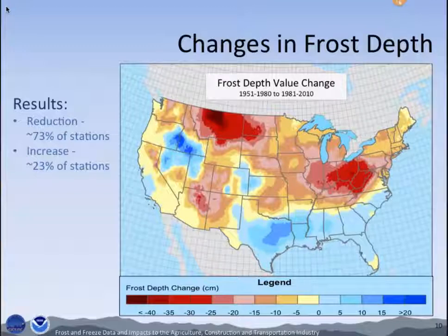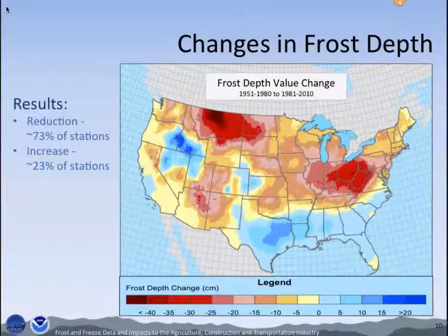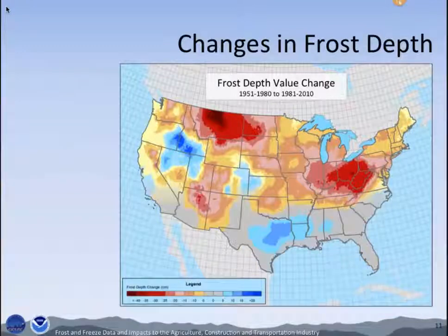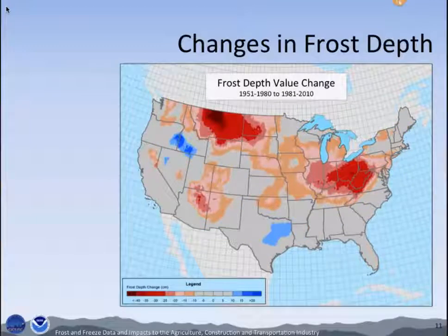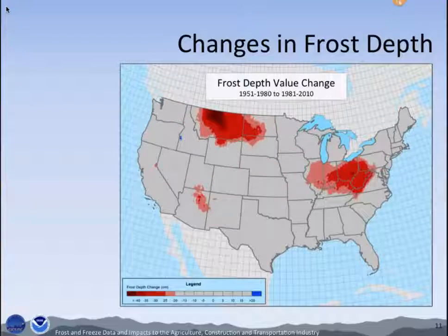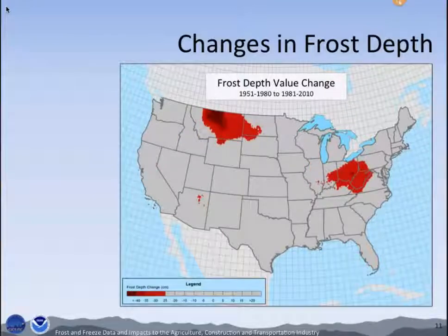I wanted to highlight a more discrete visual on this. If you were to display only the locations that experienced at least 5 centimeters or greater of change, this is what the map would look like — and then greater than 10 and 15. At 20 centimeters or greater, you can see that most of the cooling is just appearing near the Idaho and Oregon border area. And anything 25 centimeters or greater is just on the warming side.